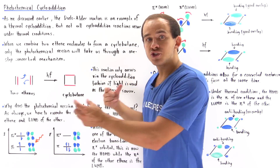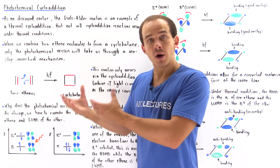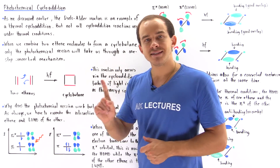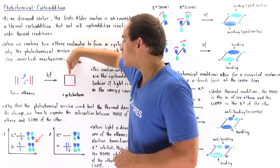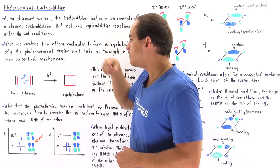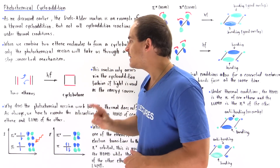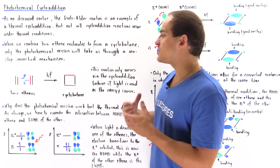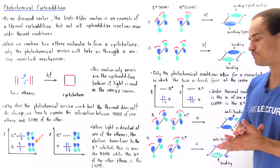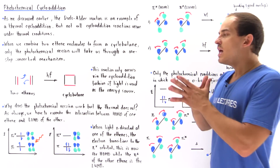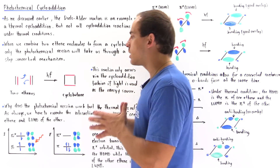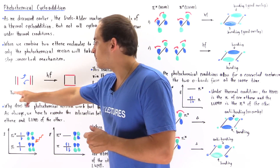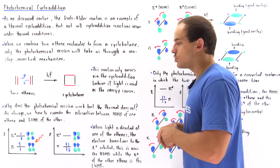For this reaction to actually take place in a cycloaddition manner, the overlap between HOMO and LUMO has to take place in a single step. That means these two sigma bonds have to be made at the same time that these two pi bonds are broken. Let's discuss what our molecular orbitals of the pi system are for our two ethene molecules.